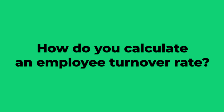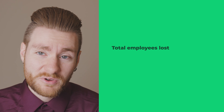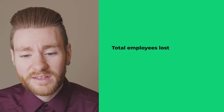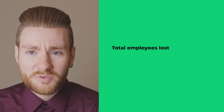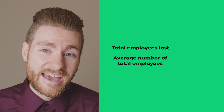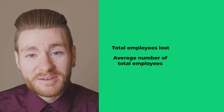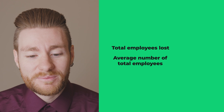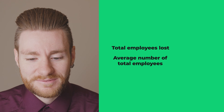So how do you calculate an employee turnover rate? To find your turnover rate, add up the number of employees lost in a specific period of time — this could be a year or a quarter, for example. You'll also want to gather the average number of total employees you had during that time. For example, let's say we had 30 employees at the beginning of the calendar year, but we lost five by the end.